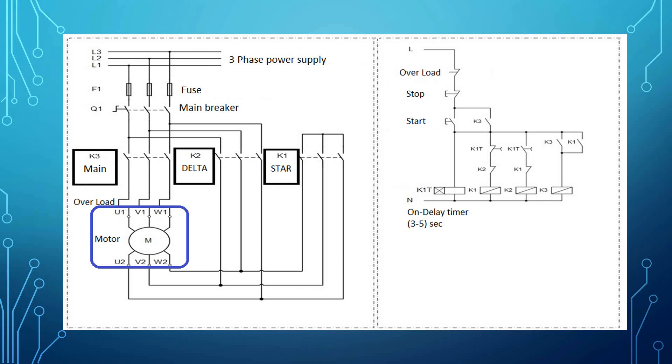These parts are the main parts of the power circuit. The control circuit includes the timer on delay to switch between the star and delta contactors.